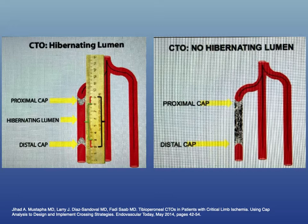When looking at CTOs, you also have to understand the concept of the hibernating and non-hibernating lumen. A hibernating lumen means you have a proximal and distal cap in a CTO, but in between those caps the channel is open — it may be filled with debris, fibrotic tissue, or even thrombus, but it's not occluded all the way through.